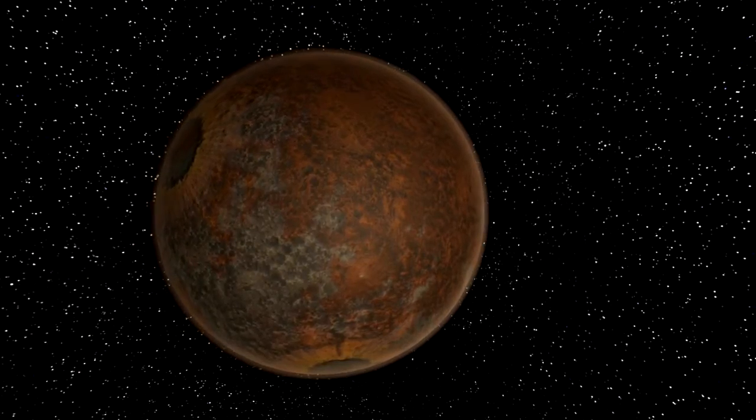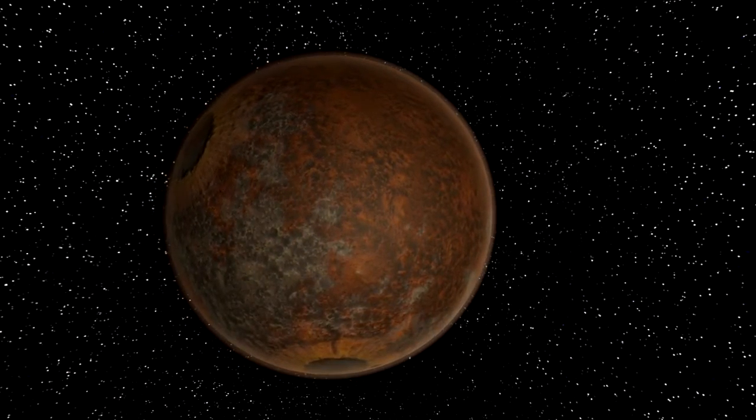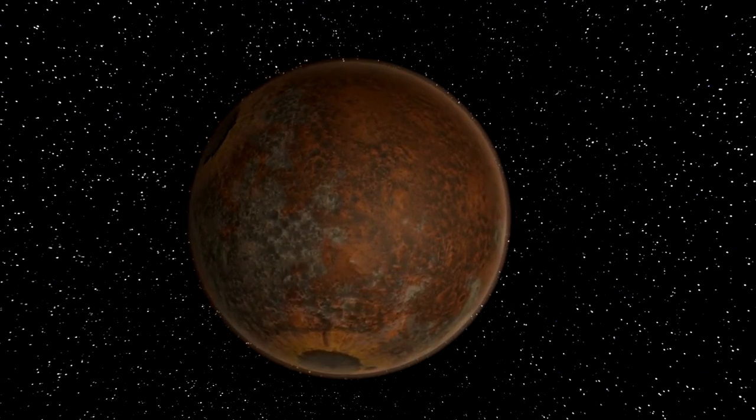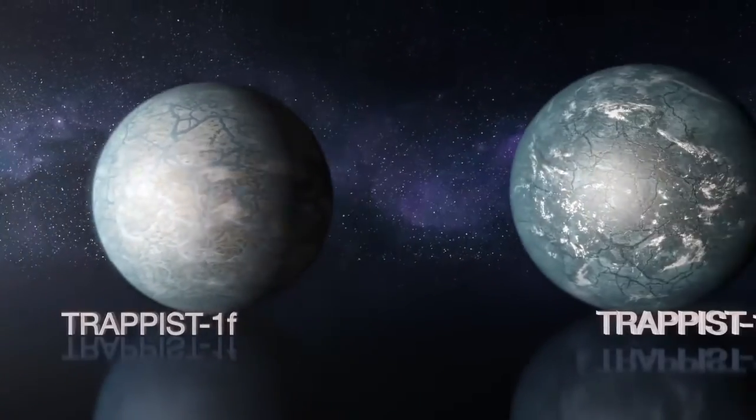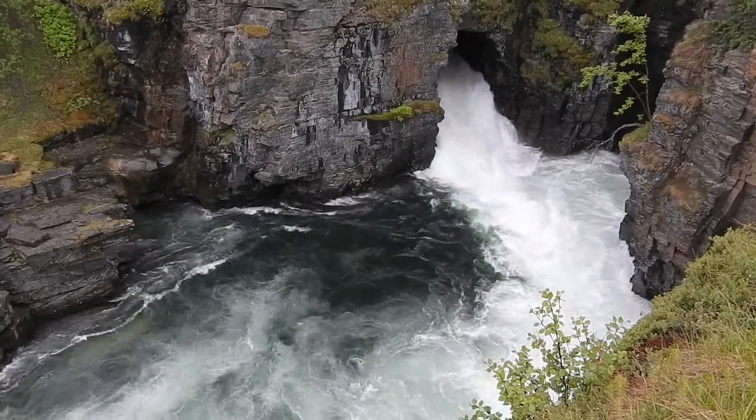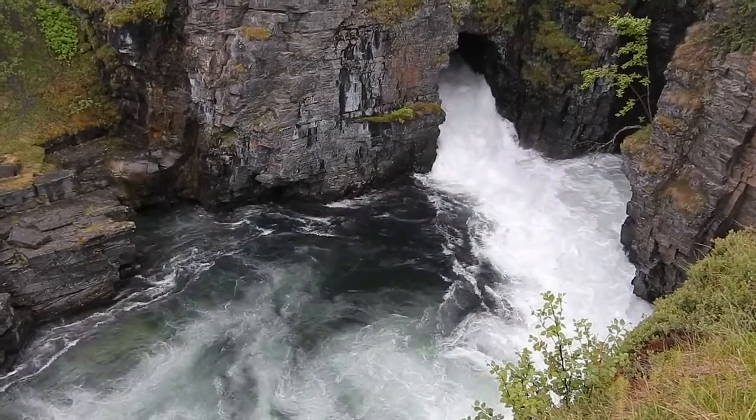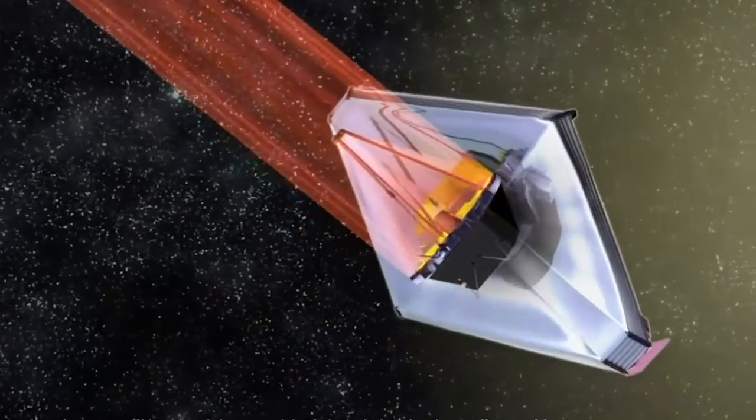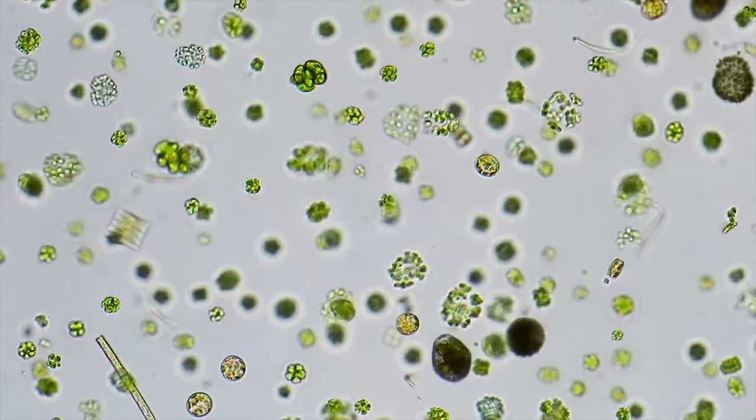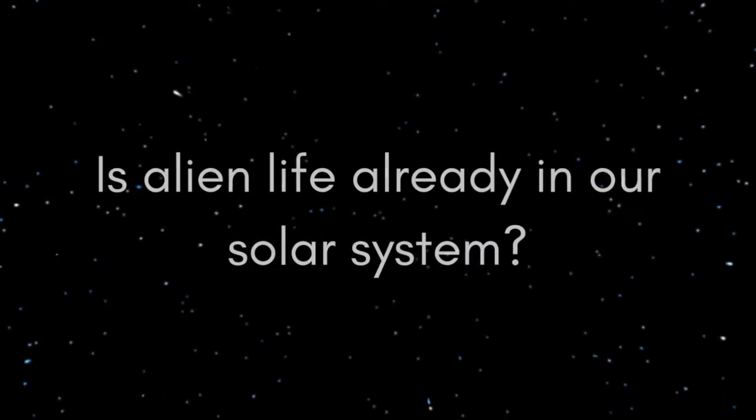One intriguing planetary system that the James Webb Space Telescope will study is about 40 light-years away. A small, cool star called TRAPPIST-1 is orbited by seven Earth-sized planets, and three of them orbit in the zone where temperatures should be mild enough to have water in liquid form. It's the perfect target for the James Webb Space Telescope, says the astronomers who think that there is a possible alien life there based on analysis and research from 2014.